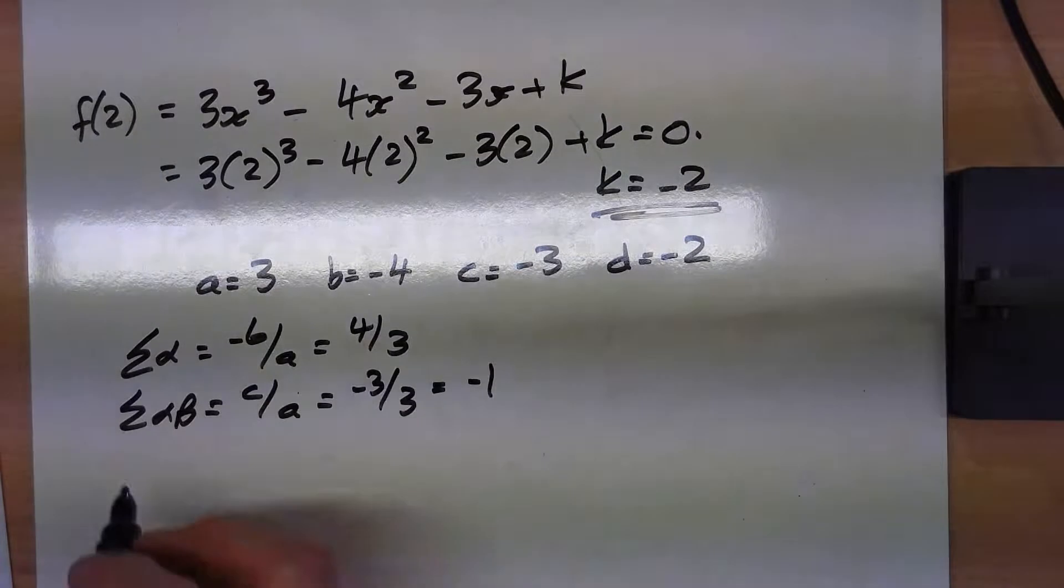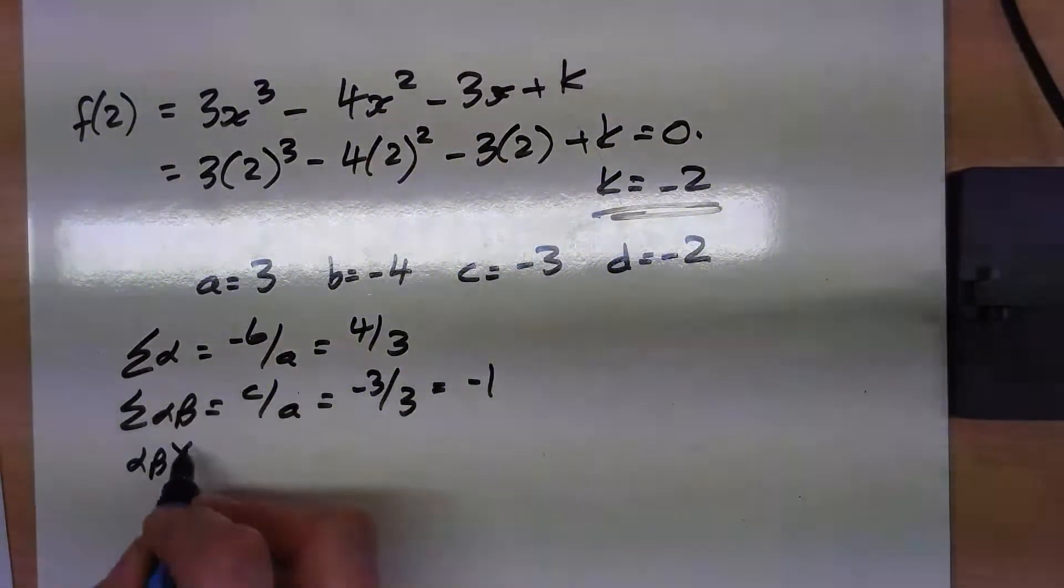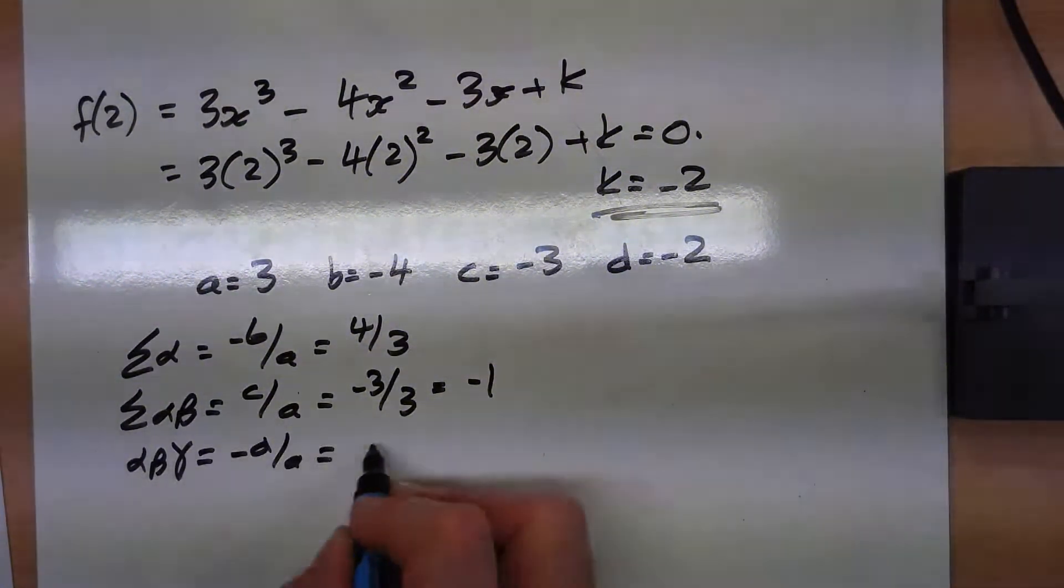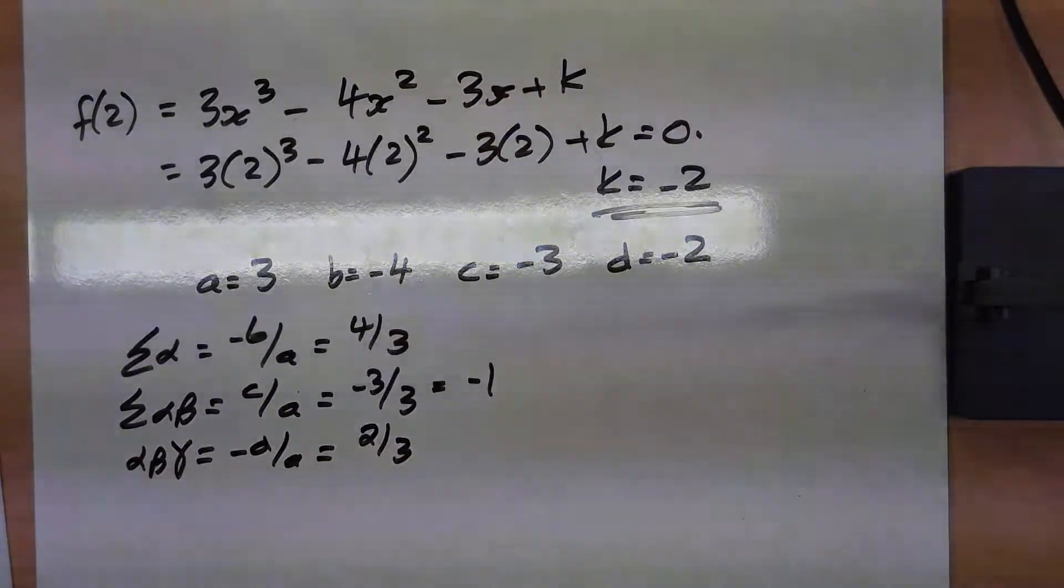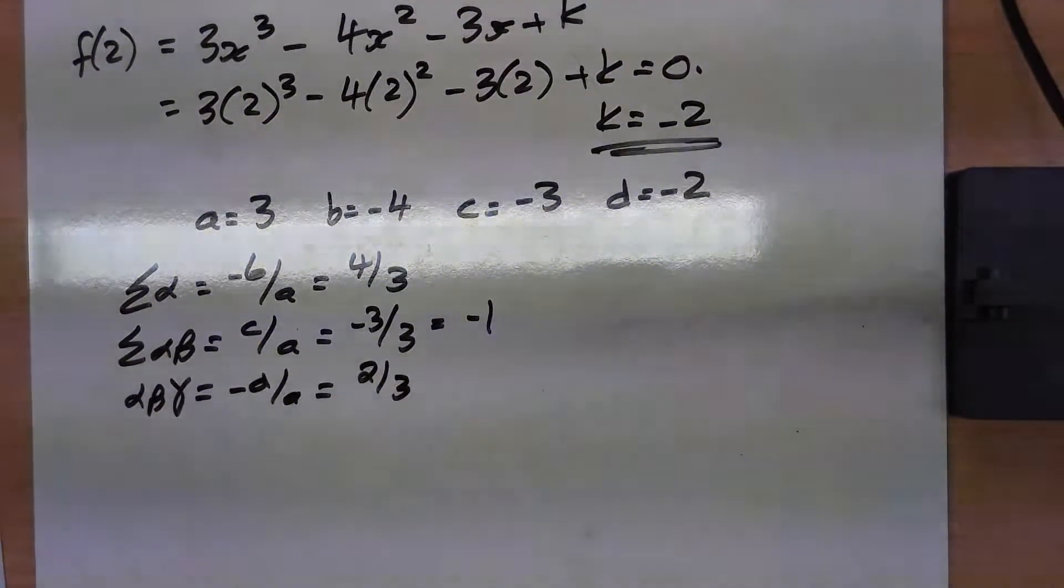And the last one, the product of the roots, is minus d over a, so that's 2 thirds. That's the usual thing, working and all of that.